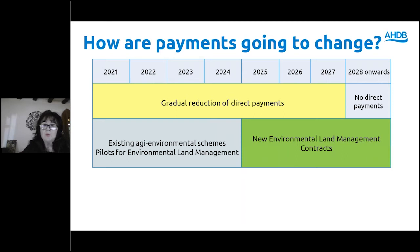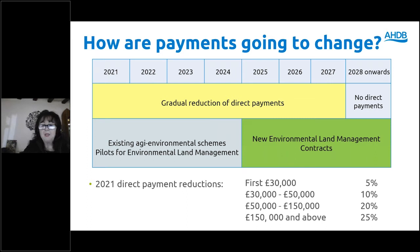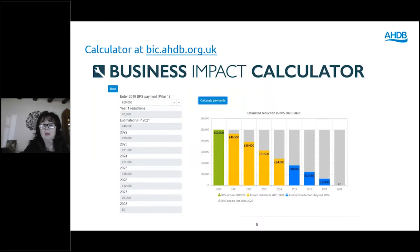DEFRA guidance is clear that all farmers and growers should be eligible to join the Sustainable Farming Initiative — the tier-one payments. This move towards public money for public goods will be a phased reduction. If you are in receipt of direct payments, you can use our business impact calculator on the AHDB website to see where payments will be reduced between now and 2028, though this is far less significant for horticulture.